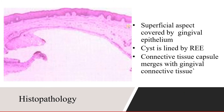Histologically, it is very similar to that of a dentigerous cyst. You will see a thin reduced enamel epithelium accounted for by the outer enamel and inner enamel epithelium, with a large cystic cavity. You may also find that the gingival tissue and the reduced enamel epithelium are separated by a small connective tissue capsule, or may also form a fusion zone.